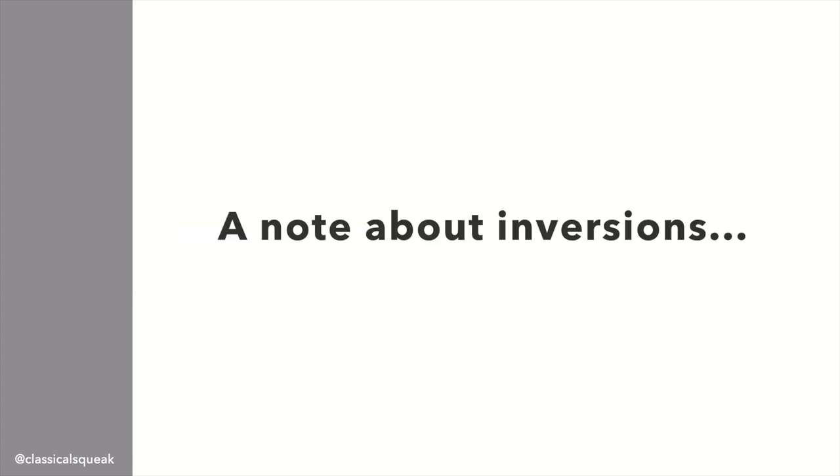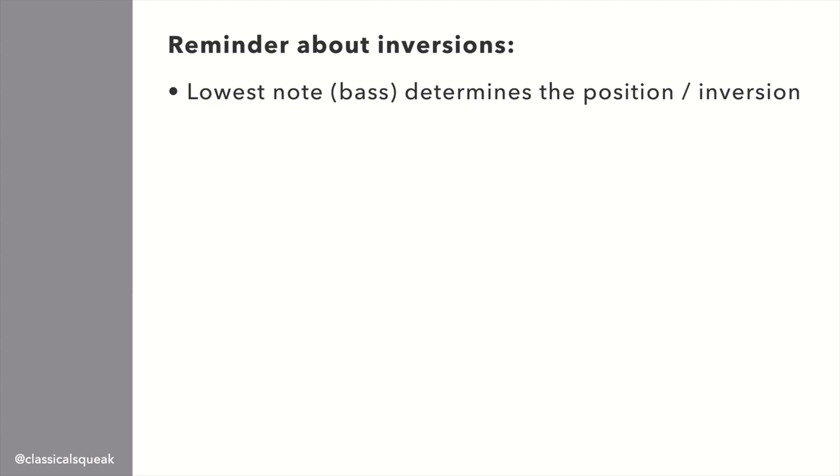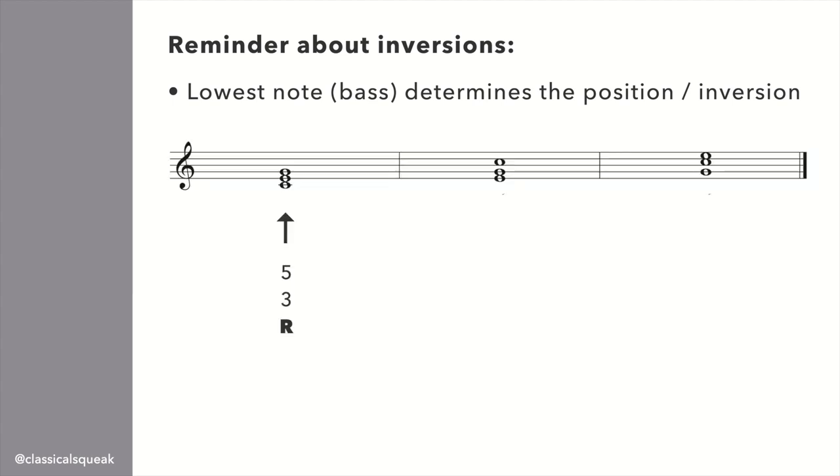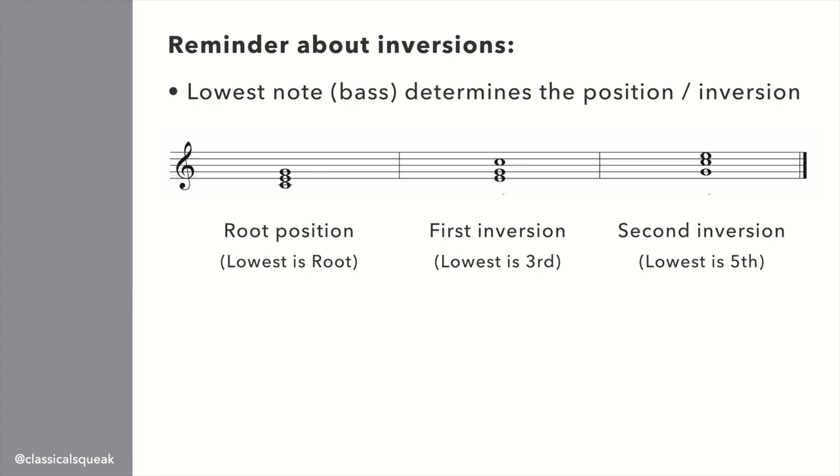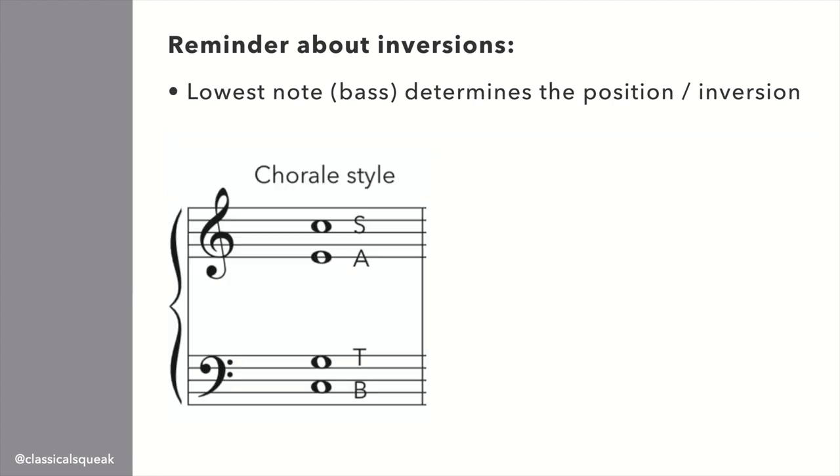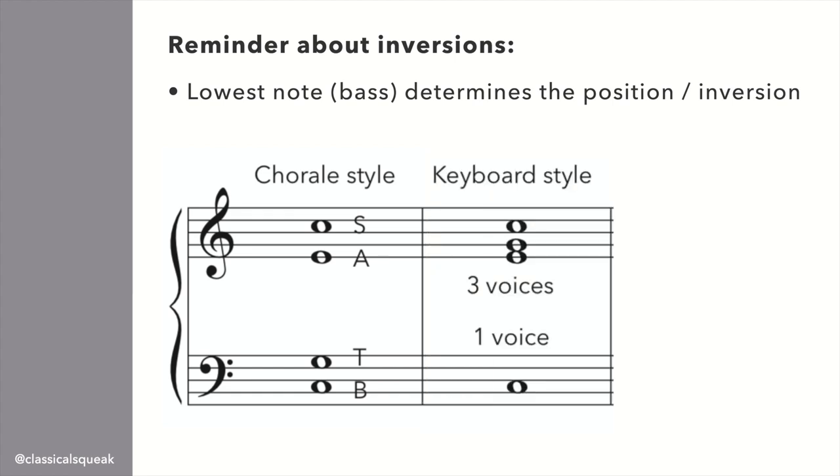Now here's what can be confusing, and very related to the ear training videos that you may have watched. The lowest note played from the chord determines what inversion you are in. So if the lowest note here is C, we are in root position. Lowest note is E, we are in first inversion. Lowest note as G, we are in second inversion. Commonly, in harmony class, you'll deal with chorales which need four voices, S-A-T-B, soprano, alto, tenor, bass.